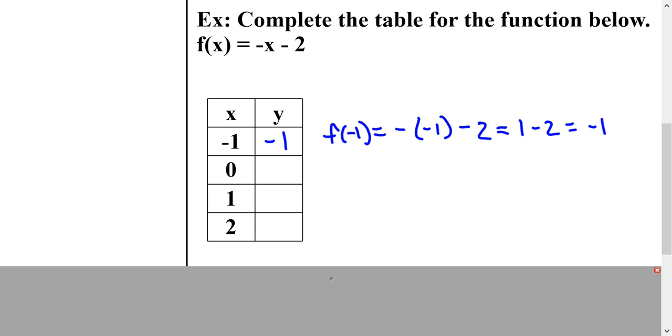The next one that I'm doing is f(0). And so then I have -0, which is just 0, minus 2, and so my answer is -2. Then I have to evaluate for 1. So f(1) is equal to -1 - 2. So -1 - 2 would equal -3.